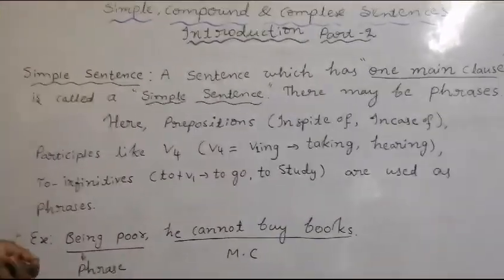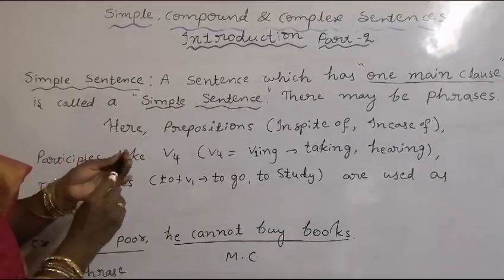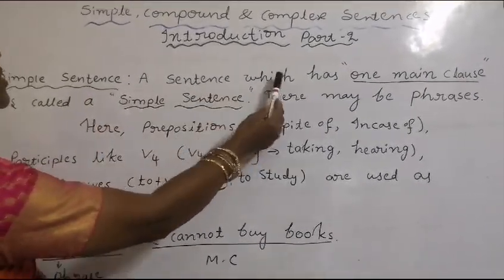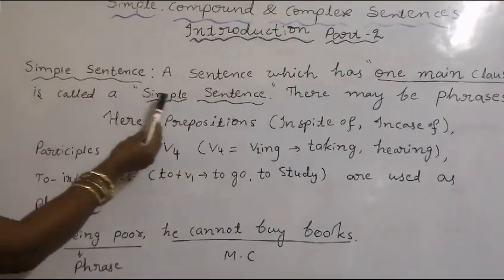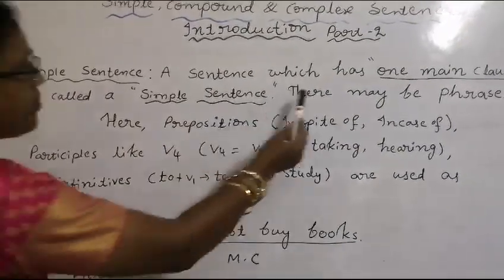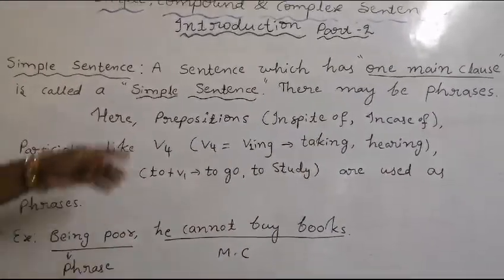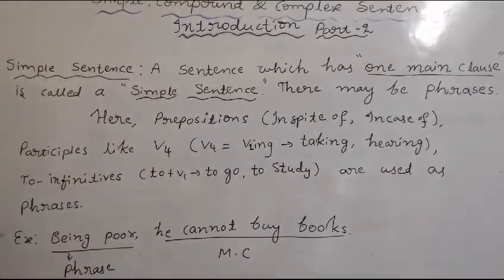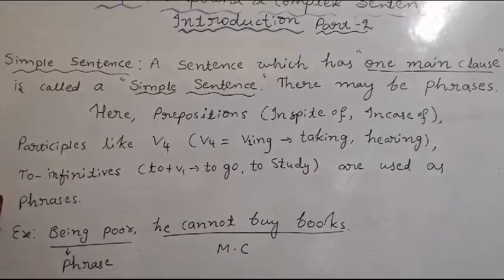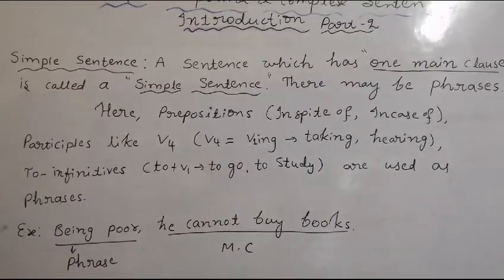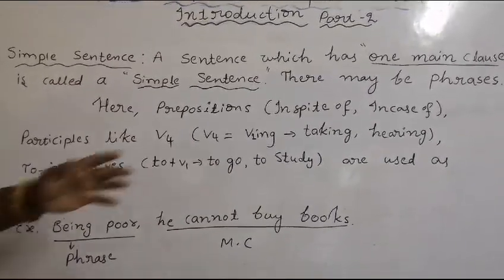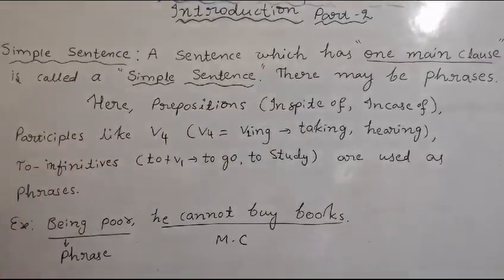What is a simple sentence? A sentence which has one main clause is called a simple sentence. There may be phrases. Only one main clause will be there, and sometimes phrases may be there.